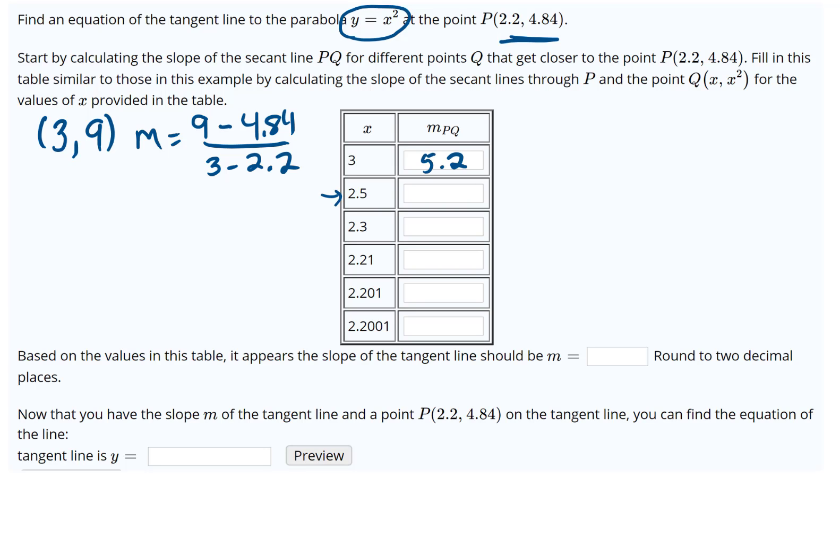Now we're going to do the very same thing, but we're going to use 2.5. So using 2.5, we square it and that would be 6.25. Then we're going to do a slope: 6.25 minus the 4.84 divided by 2.5 minus 2.2.